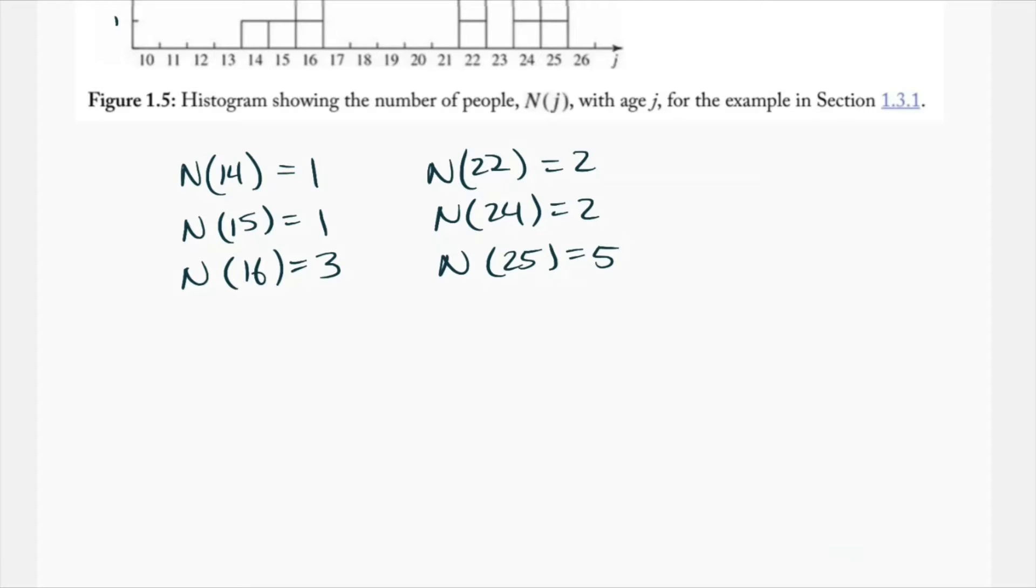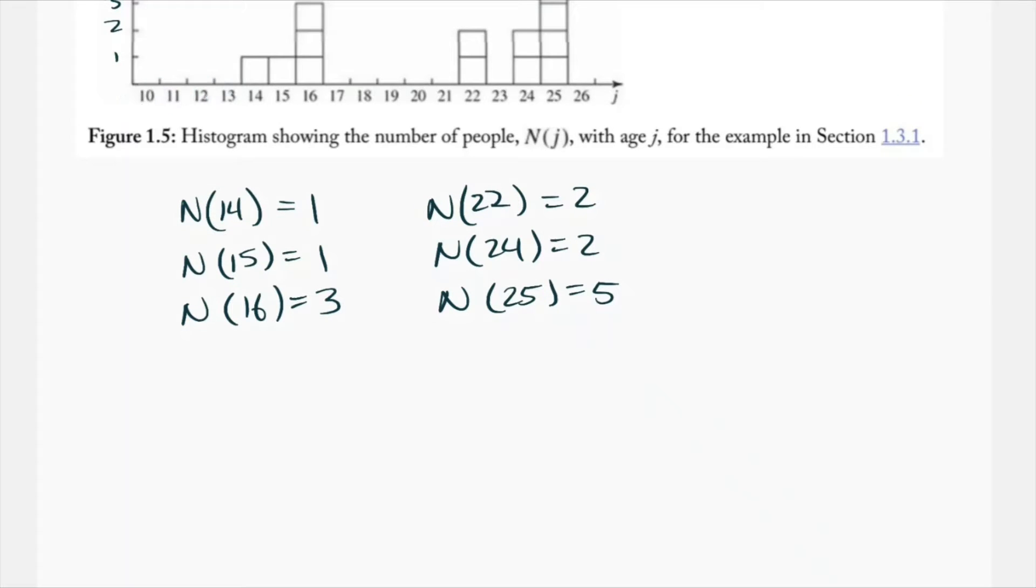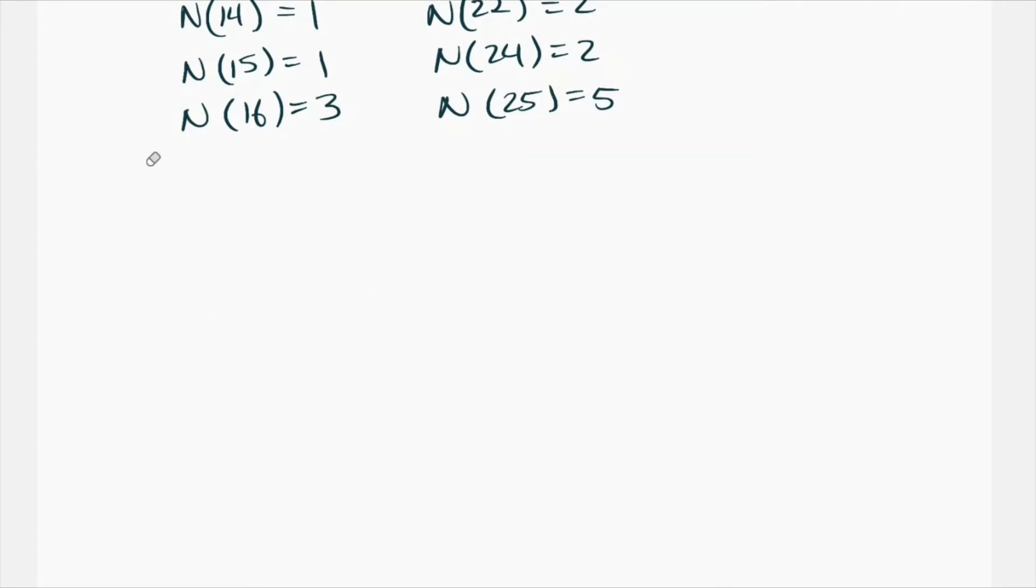We also want to note that the n of every other value of j is zero, because obviously there's zero people with each of these ages. And now we'll compute expectation value of j. And then after that, we're going to do expectation value of j squared. So for expectation value of j, we're just going to plug in to a formula here.